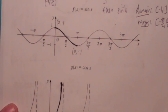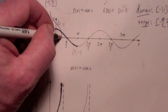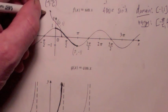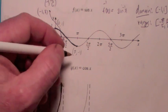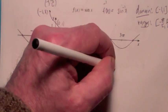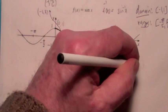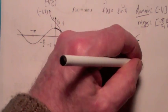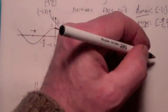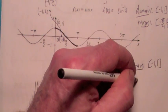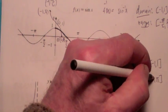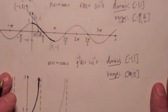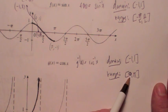The cosine function is even. This is the one-to-one strip that we usually use. If you switch x and y here, you get a strip with the point negative 1, pi and the point 1, 0. This is the graph of the inverse cosine function. The domain is negative 1 to 1 and the range is 0 to pi. You give the inverse cosine a number between negative 1 and 1, and it gives you an angle between 0 and pi.